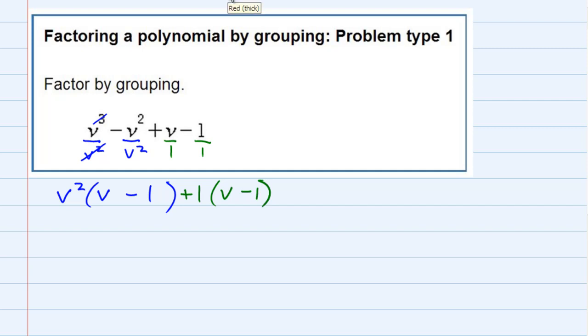But now, looking at the two terms that we have, they both have a v minus one. So I can factor out a v minus one out of each one of those, which again means I would be dividing by v minus one in each one.